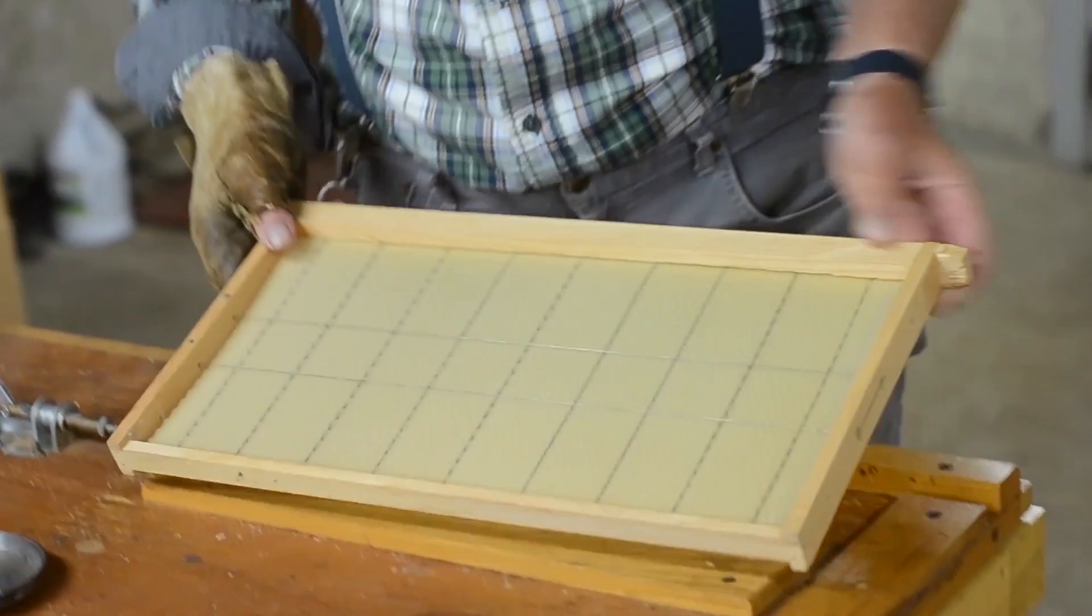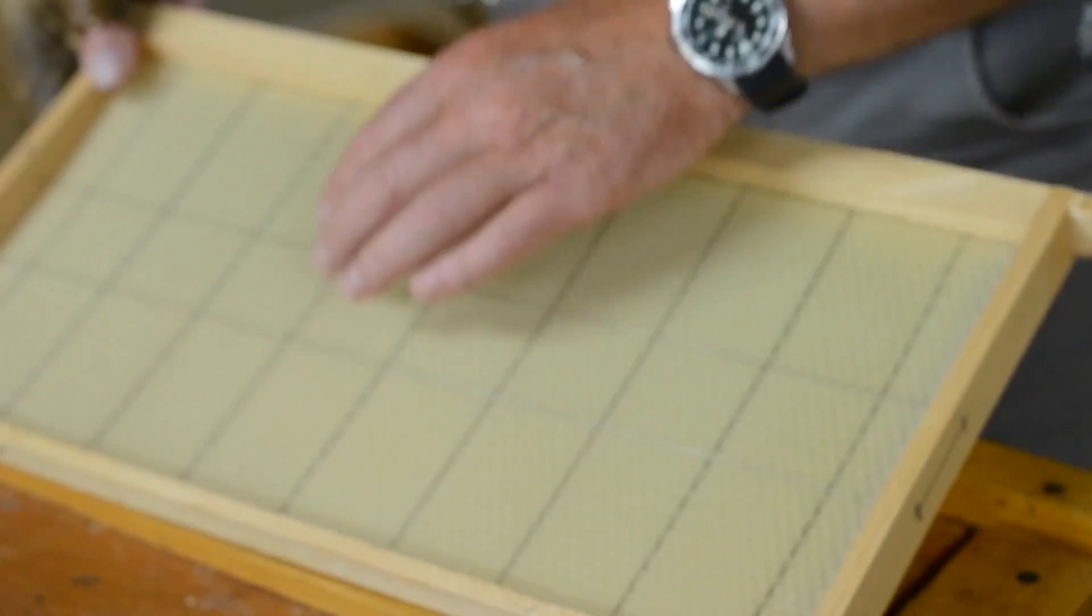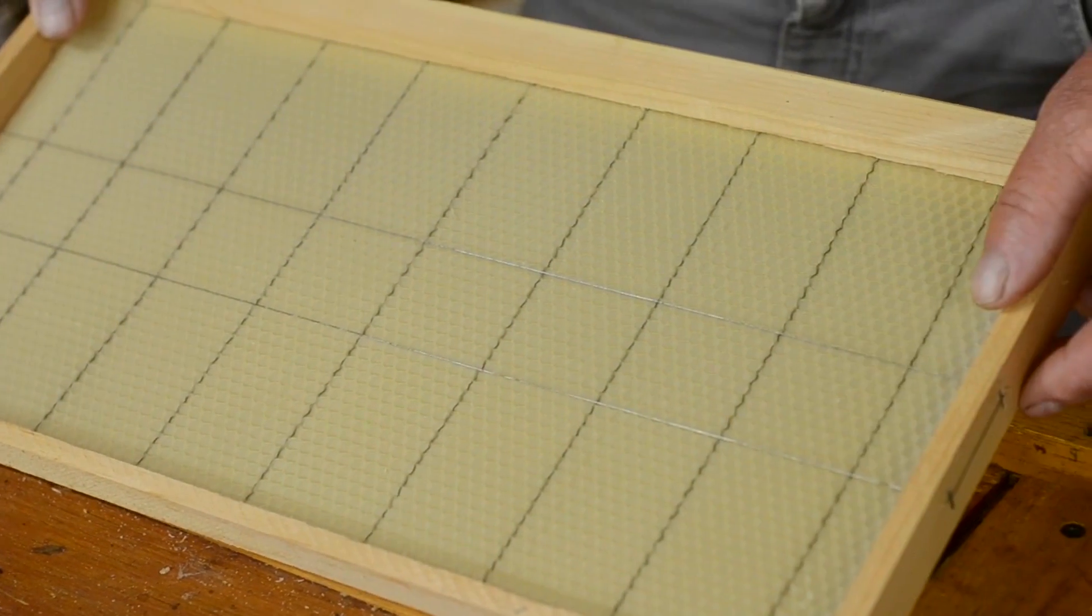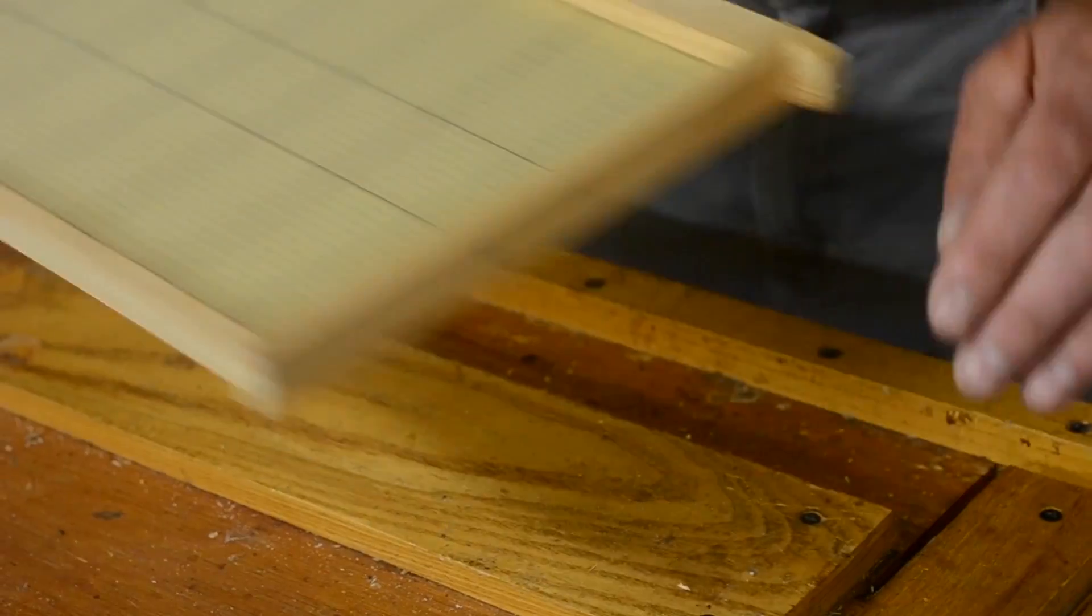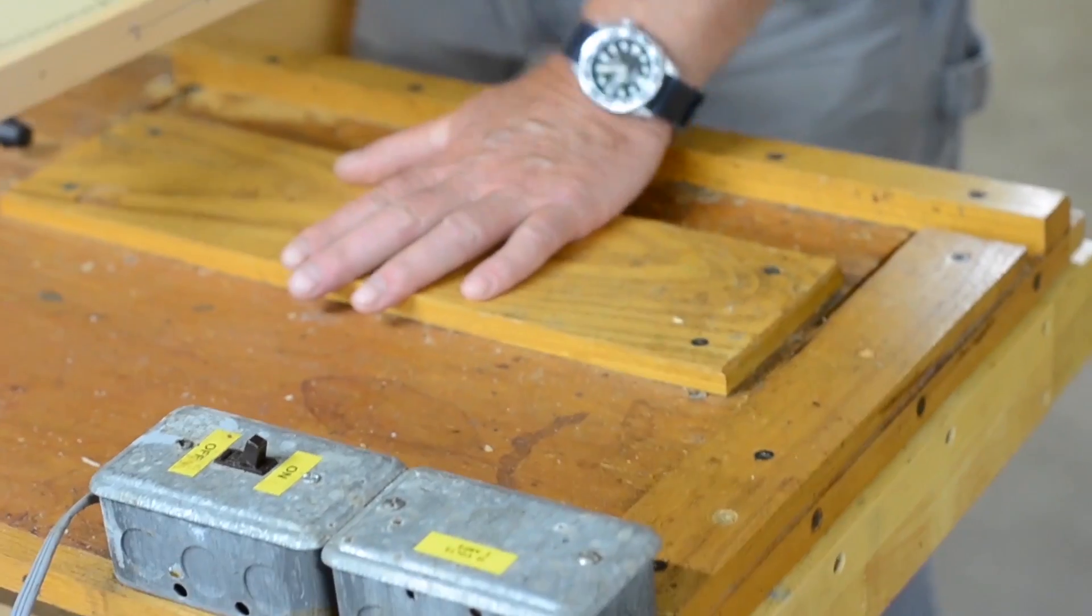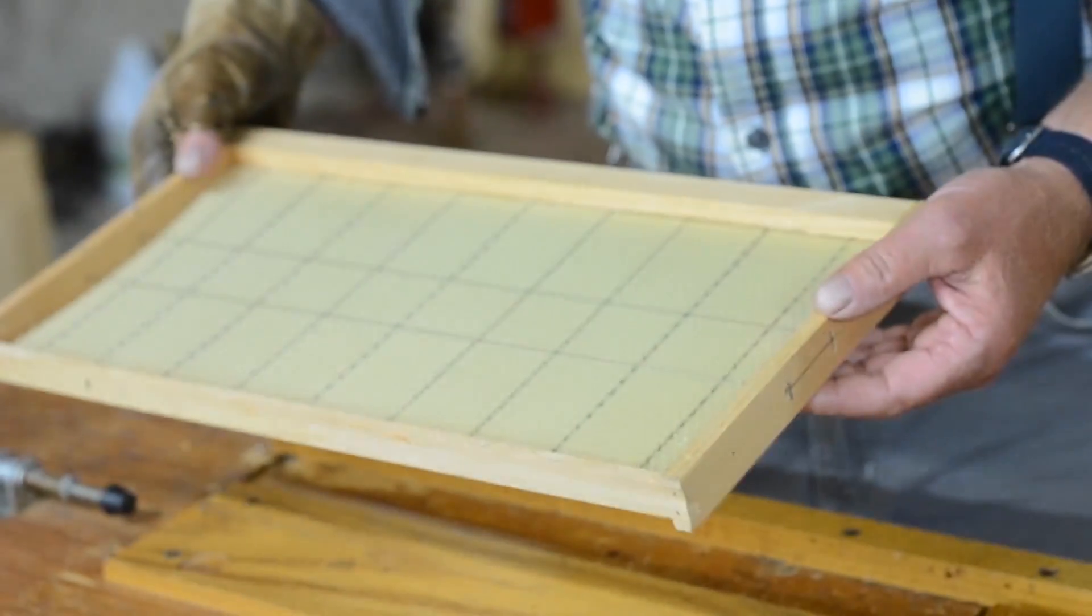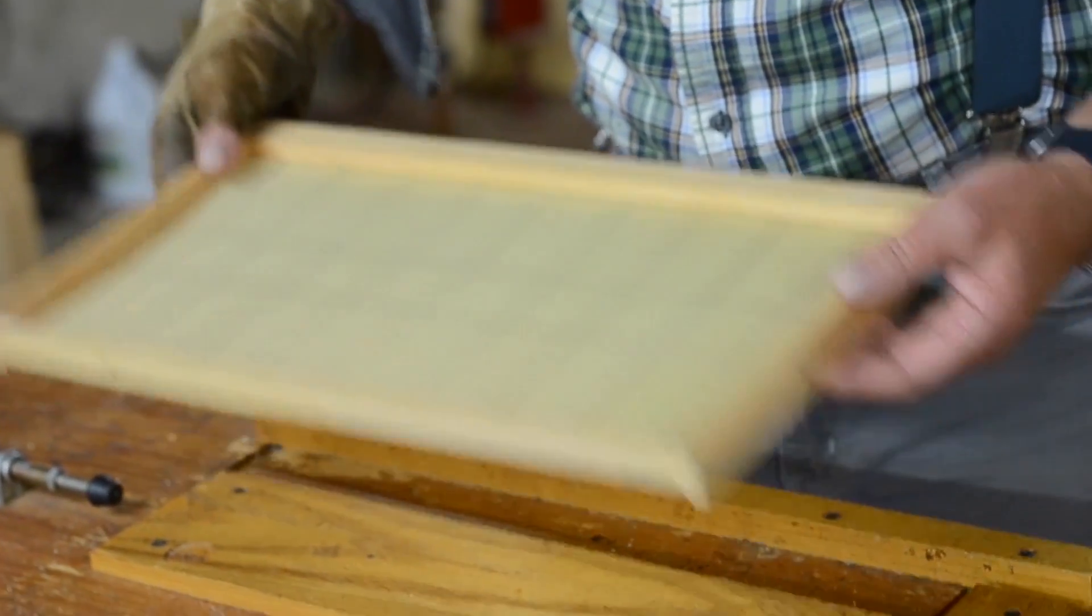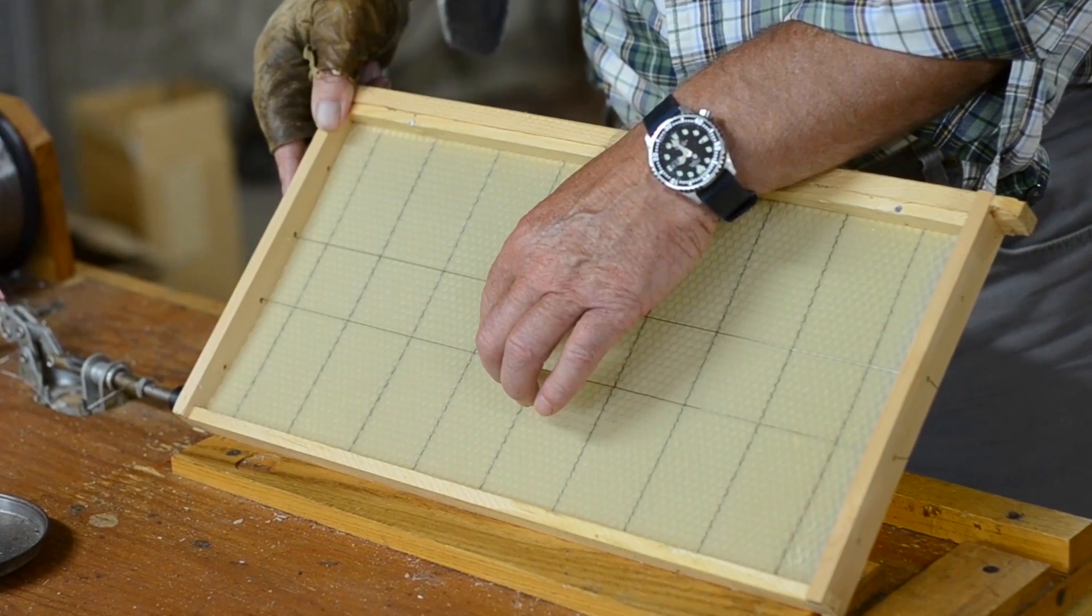Now we'll turn the frame over and you can see the wires right next to that wax. What we're going to do is we're going to run a very low amount of current, electrical current through there to heat up those wires and then this piece of wood underneath will push the wax up into the hot wires and then we let the wires cool and they are embedded into the wax. So let's just show you how that works.